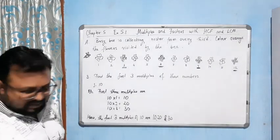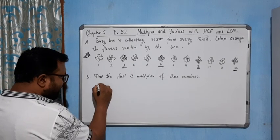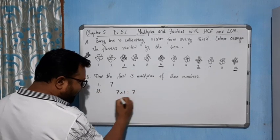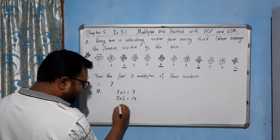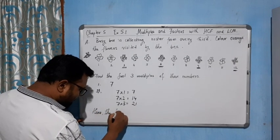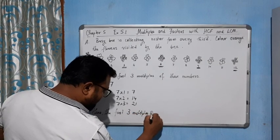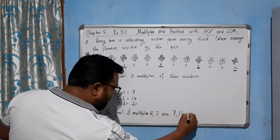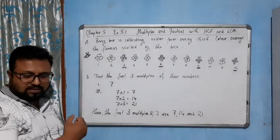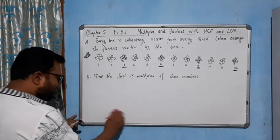Now come to the next one: 7. So we will do it like this — 7×1=7, 7×2=14, 7×3=21. Hence the first three multiples of 7 are 7, 14, and 21.